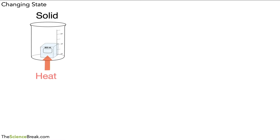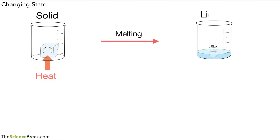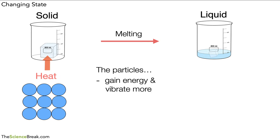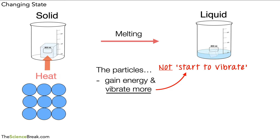We apply some heat and the ice starts melting, forming a liquid. The particles are arranged in a lattice structure and they vibrate gently in their positions. However, once we heat this material the particles will gain energy and vibrate more. It is important that we say they vibrate more — not that they start to vibrate. They are already vibrating to start with; the energy allows them to vibrate more.